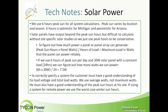To figure out how much power a panel or panel array can generate, you take the peak sun hours times the panel watts divided by the hours of load, and that equals the maximum load in watts the panel can power. For example: six hours times 30 watts divided by 24 equals 7.5 watts.